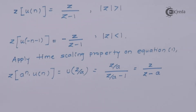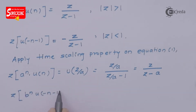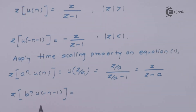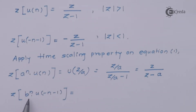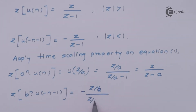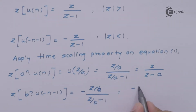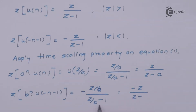Next, we apply the time scaling property to U(-n-1). The Z transform of U(-n-1) is the same as U(n) with a minus sign, so all Z are replaced by Z/B. Multiplying numerator and denominator by B: numerator becomes Z, and denominator becomes Z - B. So the Z transform of B^n U(-n-1) is -Z/(Z-B).